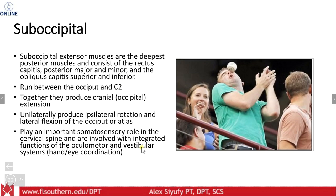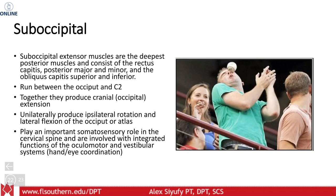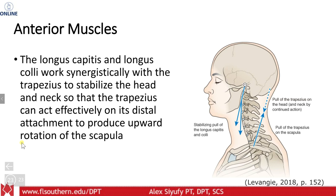And if you look at the suboccipital extensor muscles — going back to this as well — you could see semispinalis capitis and the change with that, as well as the injury, trigger points, and tenderness to those areas. So it's important to look at the suboccipital musculature. With the axis of rotation and how that's forced down, longus capitis and longus colli work synergistically with the trapezius to stabilize the head and produce that force couple at the cervical spine.